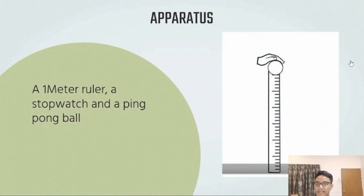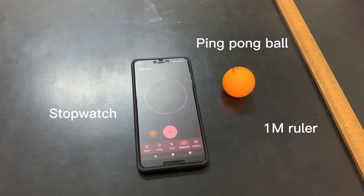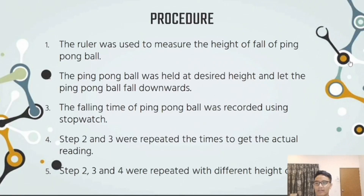The apparatus needed in this experiment are a one-meter ruler, a stopwatch, and a ping pong ball. For the procedure, step one: the ruler was used to measure the height of the fall of the ping pong ball. Step two: the ping pong ball was held at the desired height and then released to fall downwards.